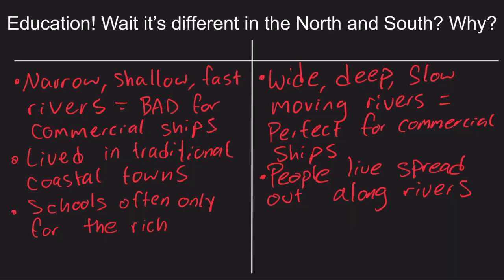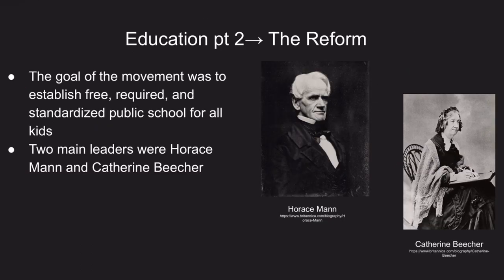Therefore, many southern families decided to homeschool their children with information they deemed necessary and then utilize them for working at home on the farm. Given this divide between not only the regions of the United States but also within social classes — where quality education was often only for the wealthy — there was a need for change. Some might say this was an opportunity for them to learn from their mistakes.